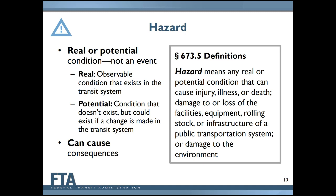A hazard can be real — an actual observable condition that exists within our system today, such as worn brakes on our buses — or it could be a potential condition that doesn't exist today but could, if our agency goes through with a planned change, such as sharp curves planned as part of a new transit center being developed. Both real and potential conditions are hazards under Part 673.